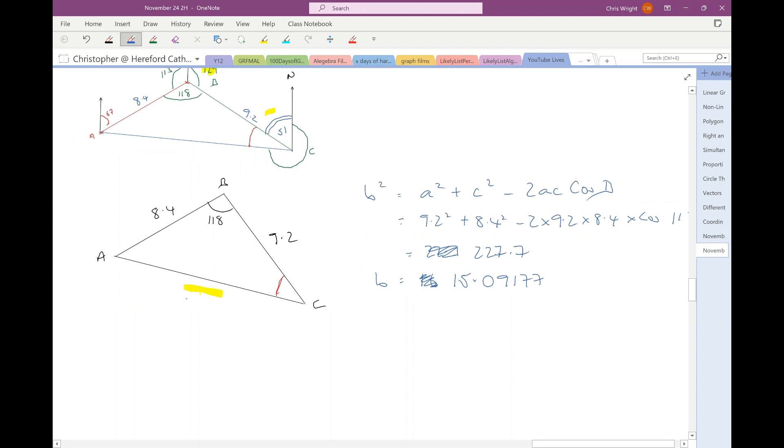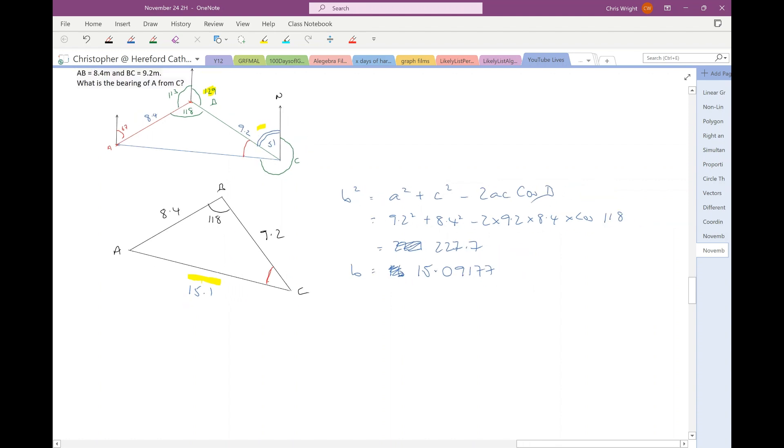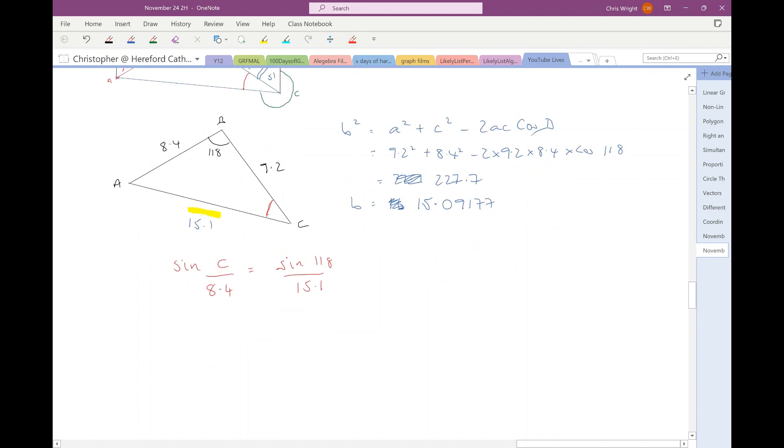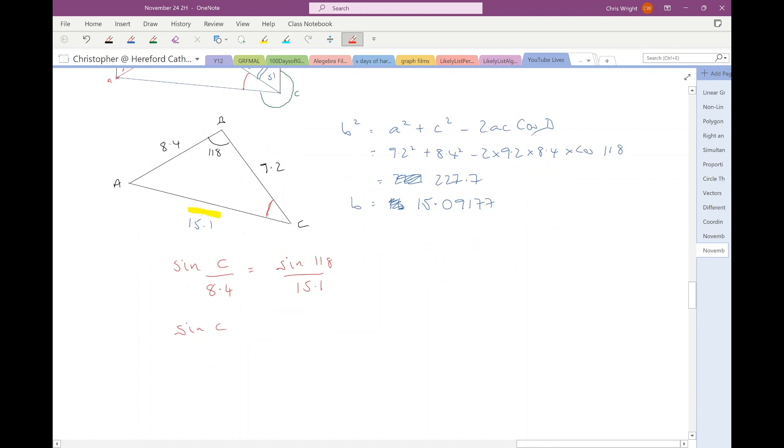Now, here we go, 15.1. Now, I can use the sine rule to find the angle C, because sine C over 8.4 will equal sine 118 over 15.1. I'm going to keep that whole number on my calculator. Sine C equals 8.4 multiplied by sine 118 divided by 15.1. Right, so keeping that whole number on my calculator.